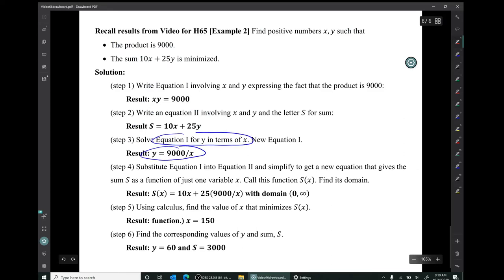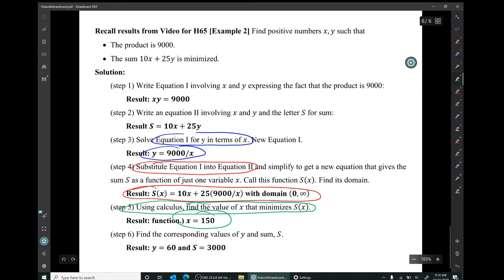We solved equation one for y in terms of x, and then we substituted equation one into equation two and simplified to get a function. We figured out the domain of that function. Using calculus, we found the value of x that minimized that function. We got that result, x equals 150, and finally we were able to find the corresponding values of y and the sum.